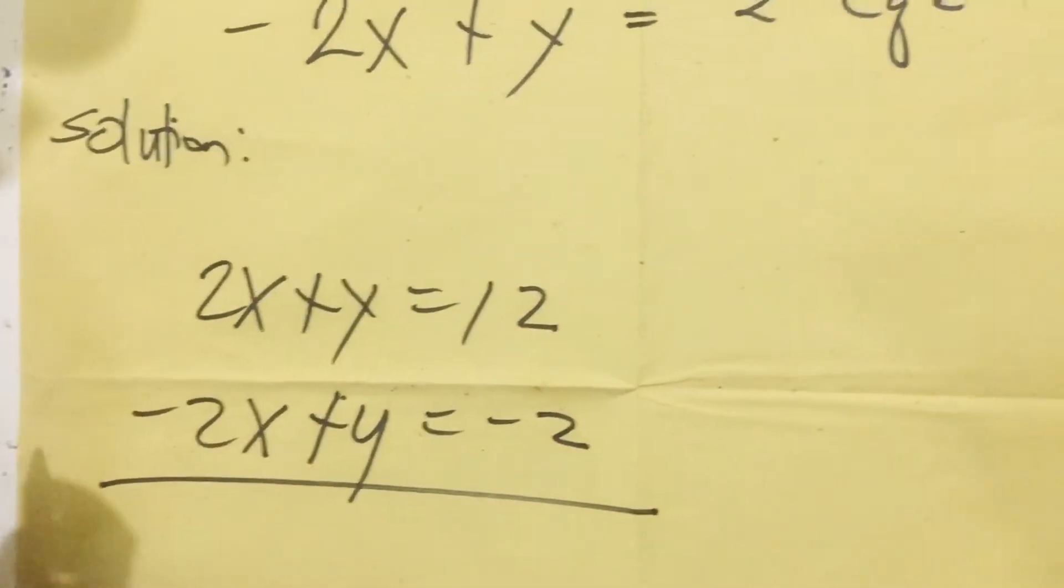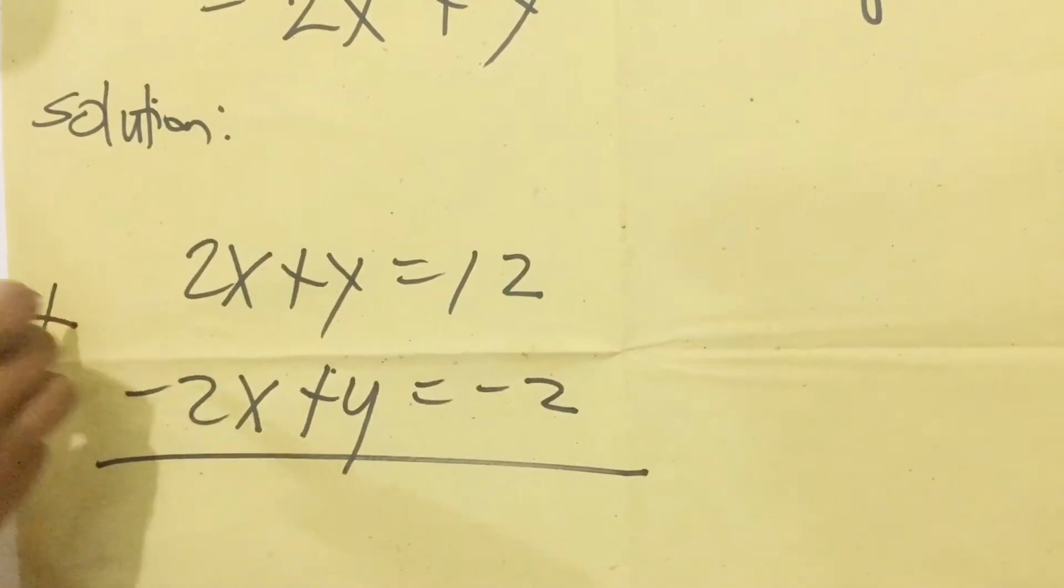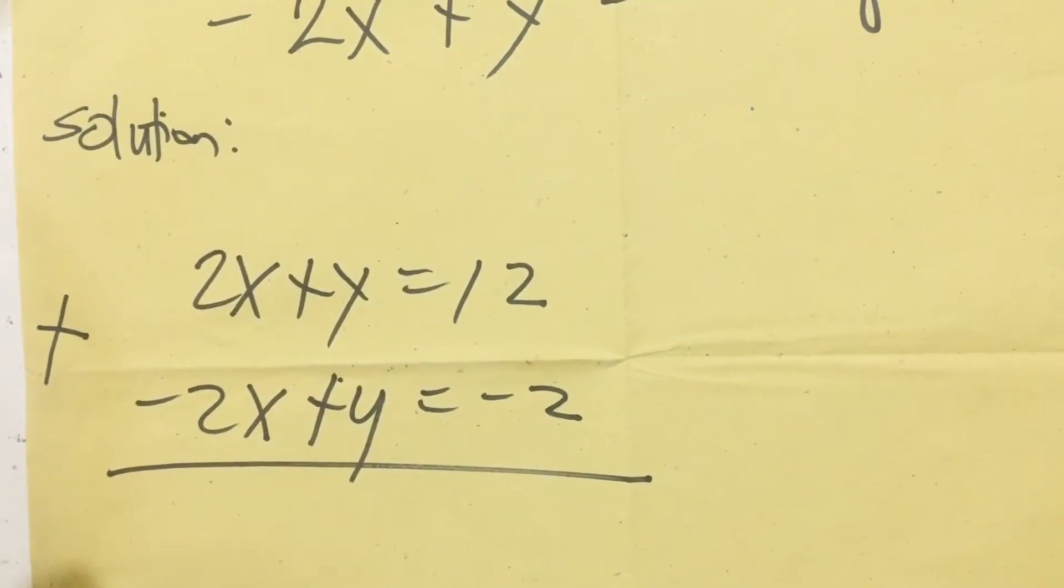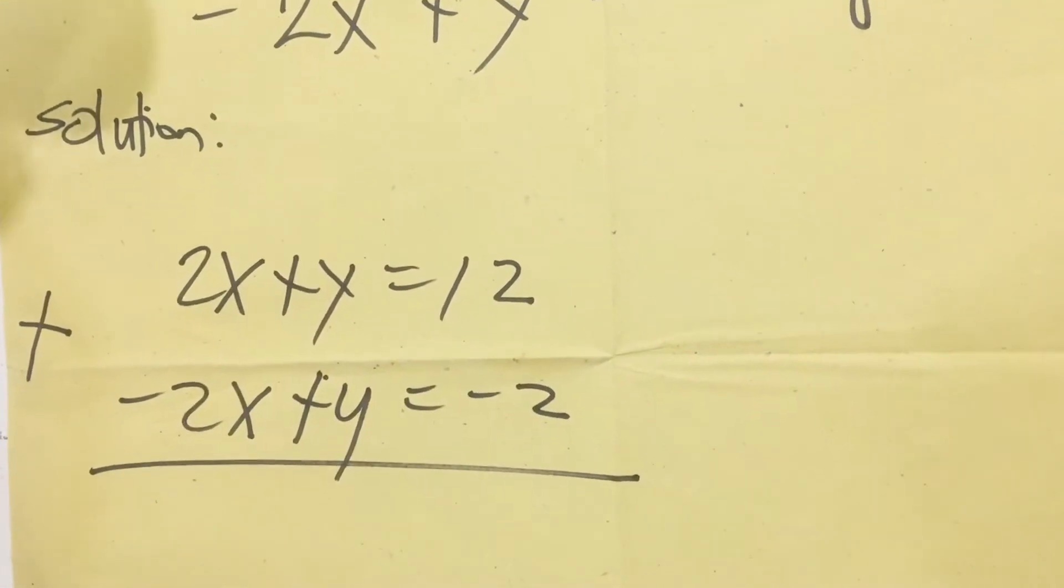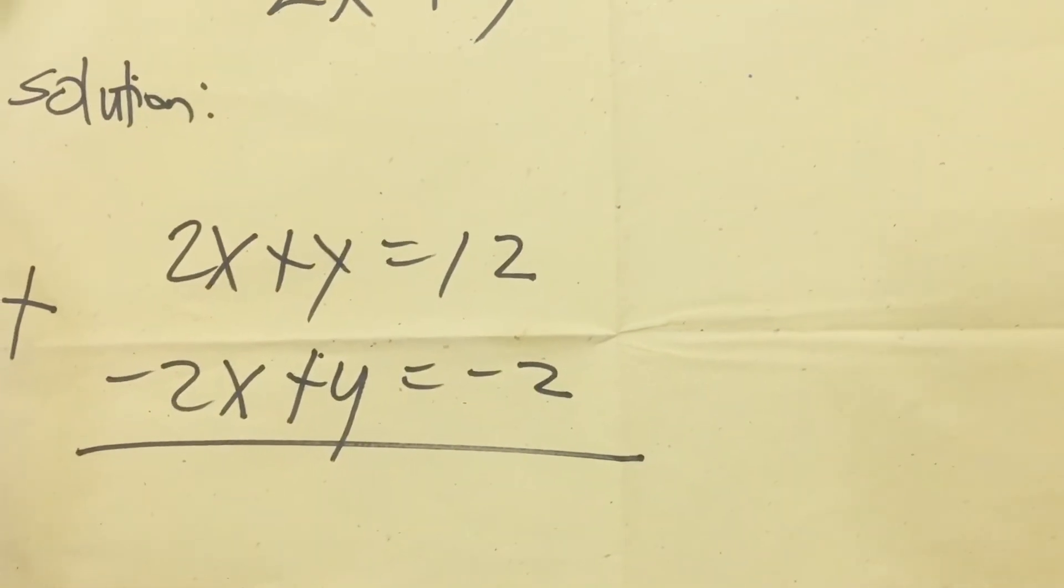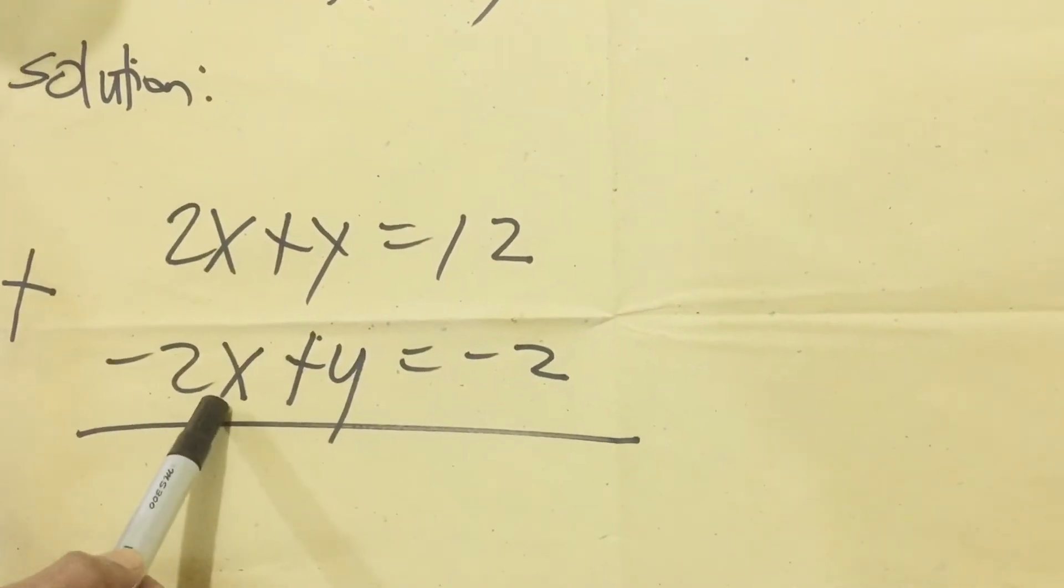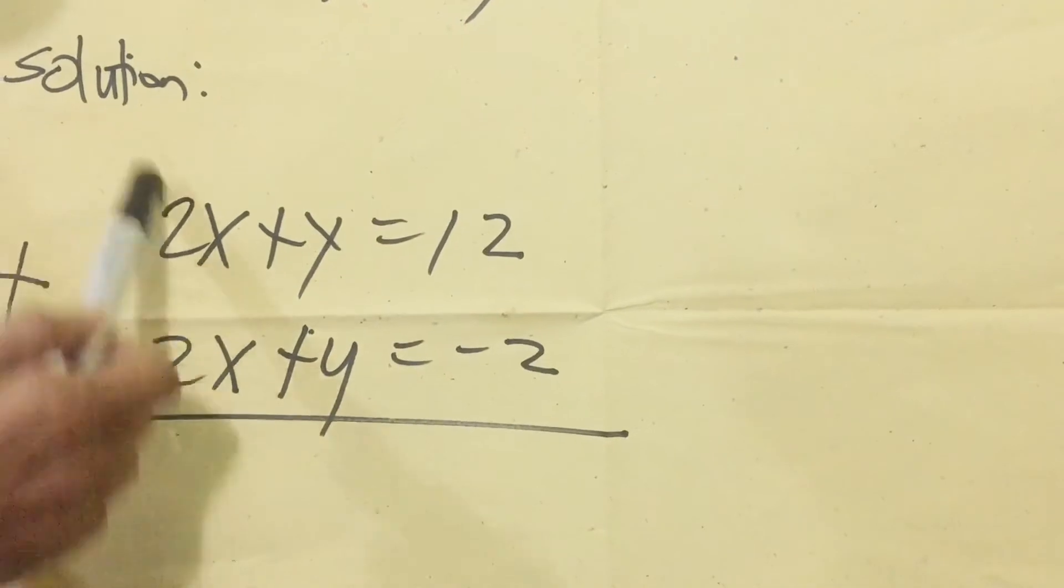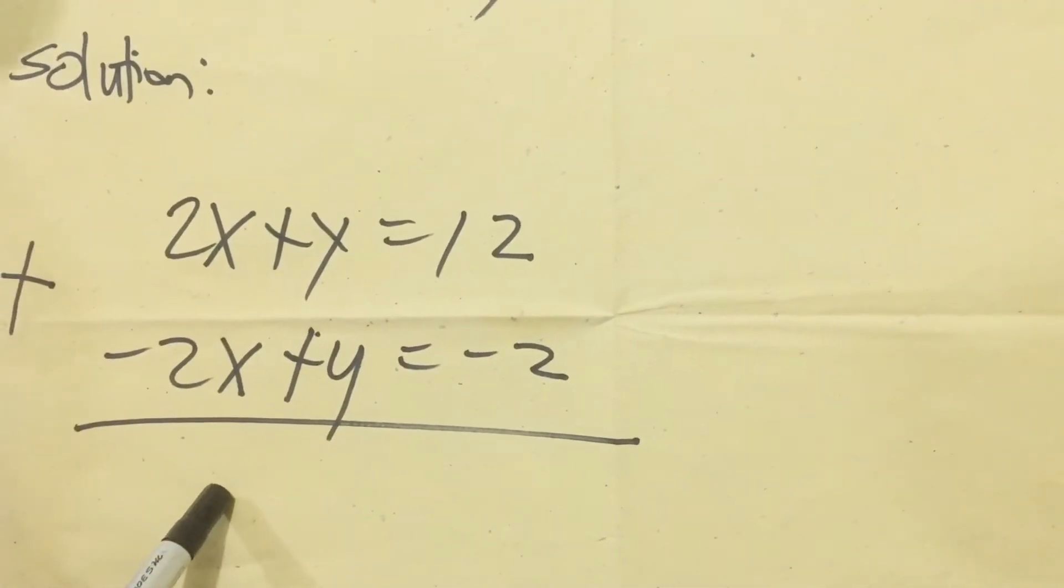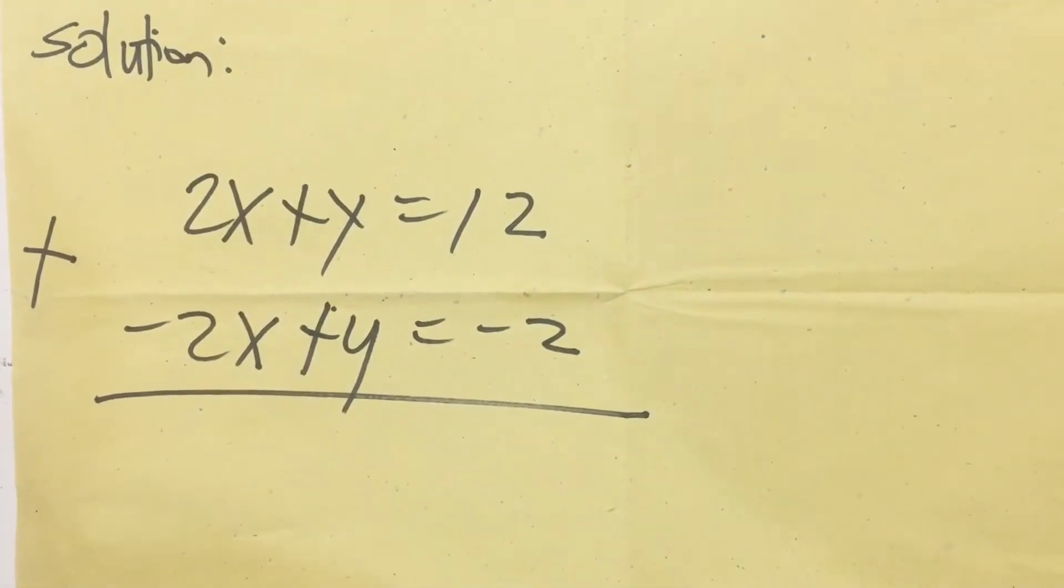Then in elimination method, we're going to add the given. The purpose of that is so that we can eliminate one of the variables of this system. The 2x and negative 2x is the first to be eliminated, and the remaining is the y. So therefore, we're going to solve for y.